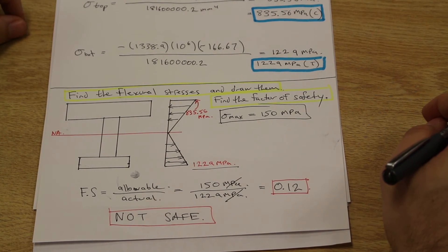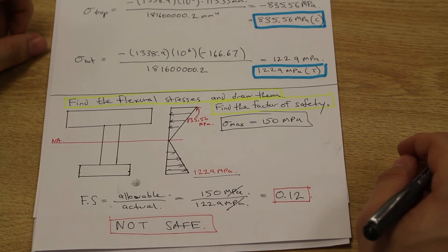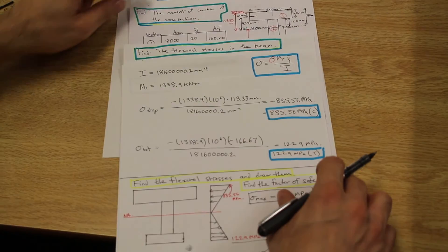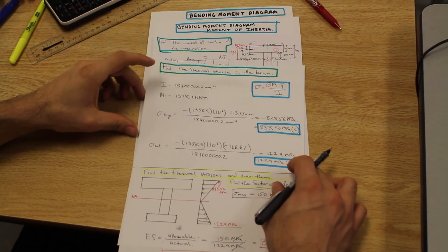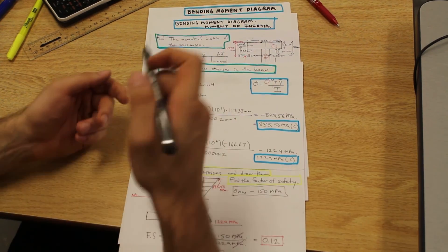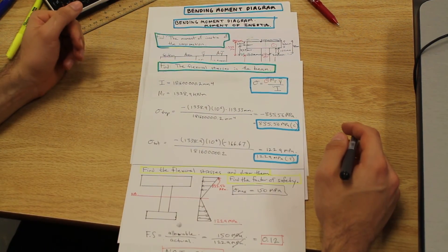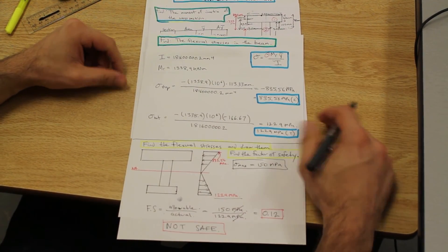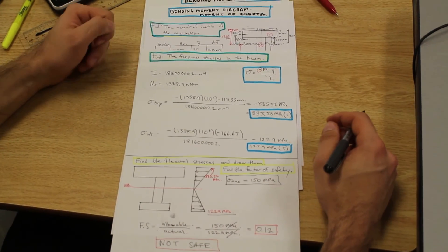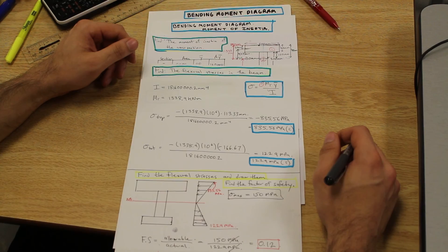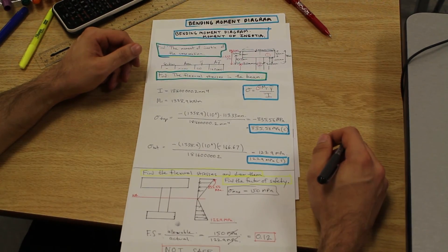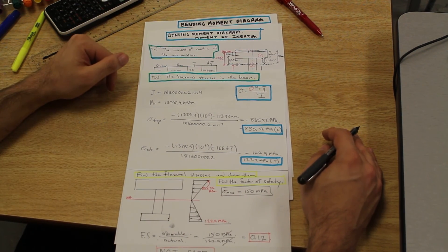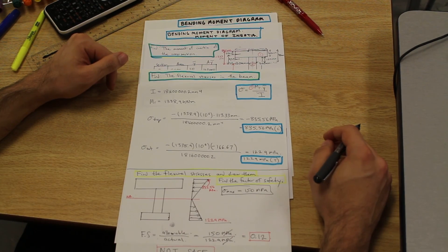So that concludes our bending moment diagram section. Just to go over a little bit of what we covered, I did that at the start of the video, but we drew our bending moment diagram. We found the moment of inertia. We found the cross-sectional, the centroid, in finding that moment of inertia. We found the flexural stresses in the beam. We drew them, and we found the factor of safety and found that the beam is unsafe. And we did all that based on our initial bending moment diagram. So I know I keep saying it, but practice those bending moment diagrams because if you get that wrong, there's no point in knowing the rest of the stuff because it'll be wrong anyway. So make sure you get that right. Practice, practice, practice, and stay tuned for more videos. Thanks for watching, guys.